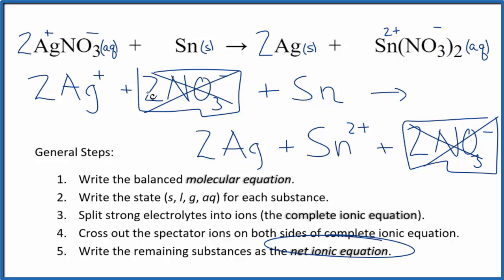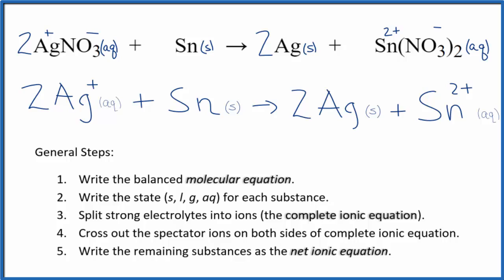I'll clean this up and add the states, and we'll have our net ionic equation. This is the balanced net ionic equation for AgNO₃ plus Sn, silver nitrate plus tin metal. You'll note charge is conserved: we have 2 times 1 plus, so on the reactant side we have a 2 plus, and over here in the products we also have a 2 plus. So that's balanced. The atoms are balanced as well.